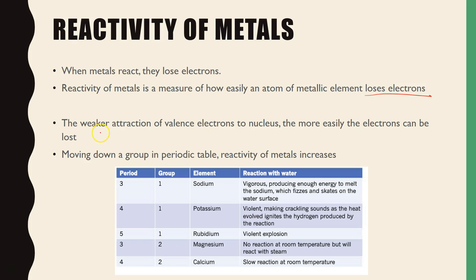And the reason why you'd lose electrons more easily is because you'd have a weaker attraction of the valence electrons to the nucleus. So electronegativity would be lower, meaning they would have less of a pull on the electrons.